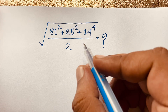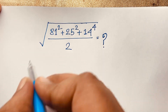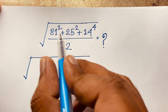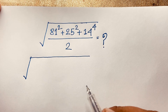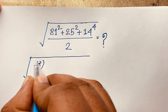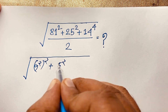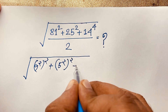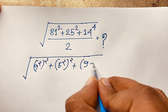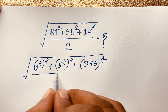For the solution, first we write the square root. Here 81 equals 9 to the power 2, and 25 equals 5 to the power 2. So inside the square root we have 9² bracket to the power 2, plus 5² bracket to the power 2, and this equals 14. Note that 9 plus 5 equals 14, raised to the power 4 over 2.